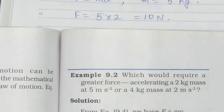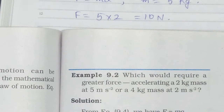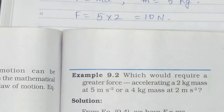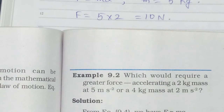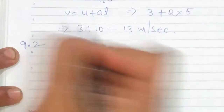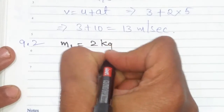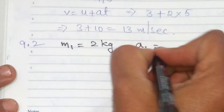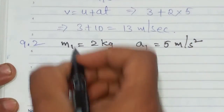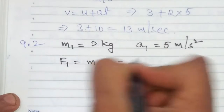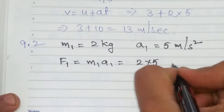The next question in example problems: which would require a greater force — accelerating a 2 kg mass at 5 meters per second square, or a 4 kg mass at 2 meters per second square? Let us see the solution. We have two masses. Let us take the first mass as M1, given as 2 kg, and acceleration A1 as 5 meters per second square. F1 is equal to M1 A1, that is 2 into 5, nothing but 10 newtons.